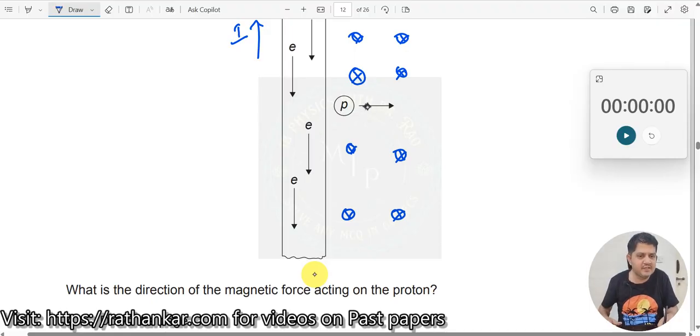Now what is happening here? This proton is now entering this magnetic field. When it enters this magnetic field, what will happen? A charge in an external magnetic field, which means that I have to use my FBI rule, which is from the left hand.